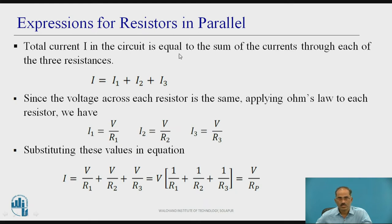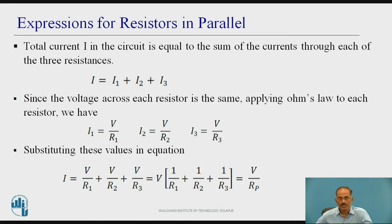Expression for resistors in parallel. Total current I in the circuit is equal to the sum of currents through each of the three resistances. Therefore, I = I1 + I2 + I3. Since the voltage across each resistor is the same, applying Ohm's law to each resistor, we have I1 = V / R1. Similarly, I2 = V / R2.